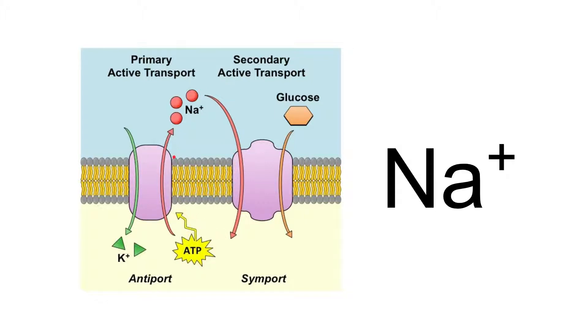Sodium ions are also used in the sodium-potassium pump. This is where three ions of sodium are moved out of a cell for every two potassium ions that are moved in. This is active transport, so requires ATP.